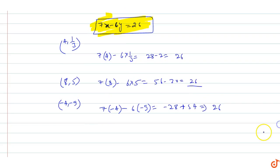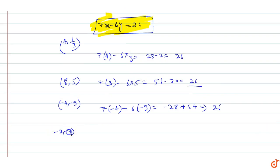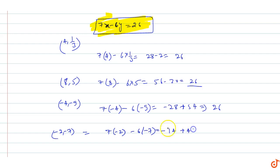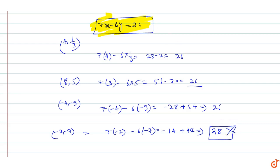Now checking point (-2, -7): 7(-2) - 6(-7) = -14 + 42 = 28. This gives 28, not 26, so this point does not satisfy 7x - 6y = 26. Therefore (-2, -7) does not pass through the tangent.